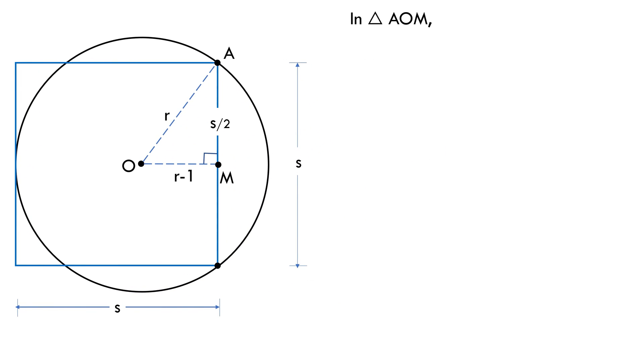Using Pythagoras theorem in this triangle, we get R squared equals (R minus 1) squared plus (S by 2) squared. Or R squared equals R squared minus 2R plus 1 plus S squared by 4. Or S squared by 4 equals 2R minus 1.